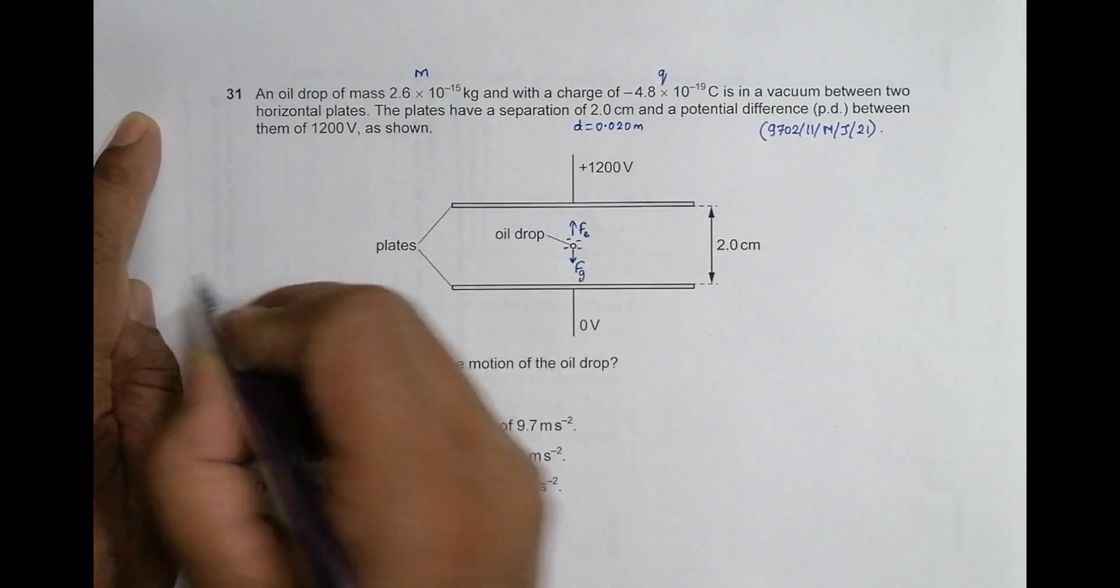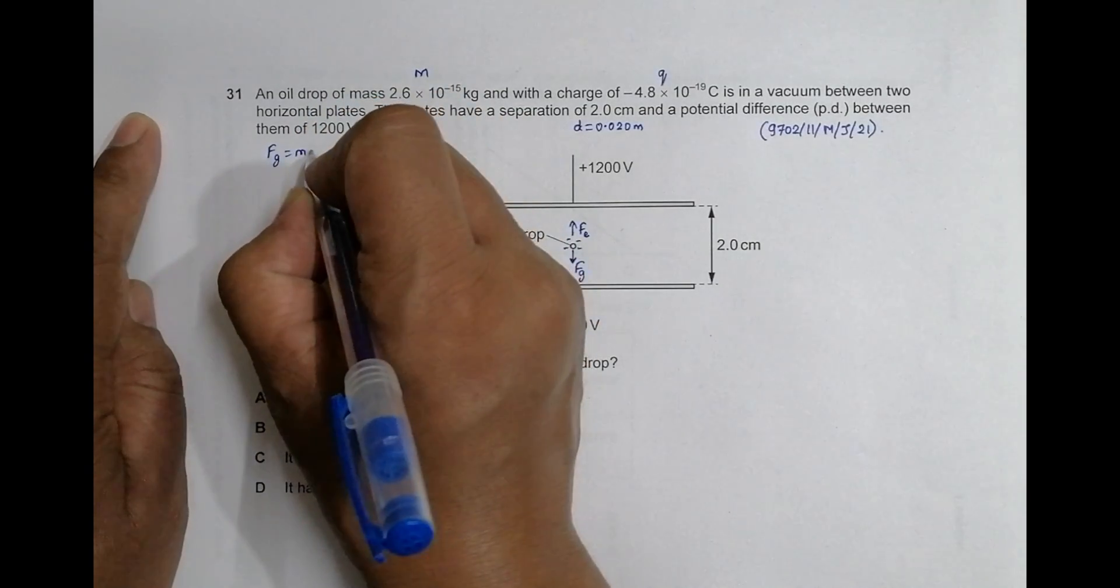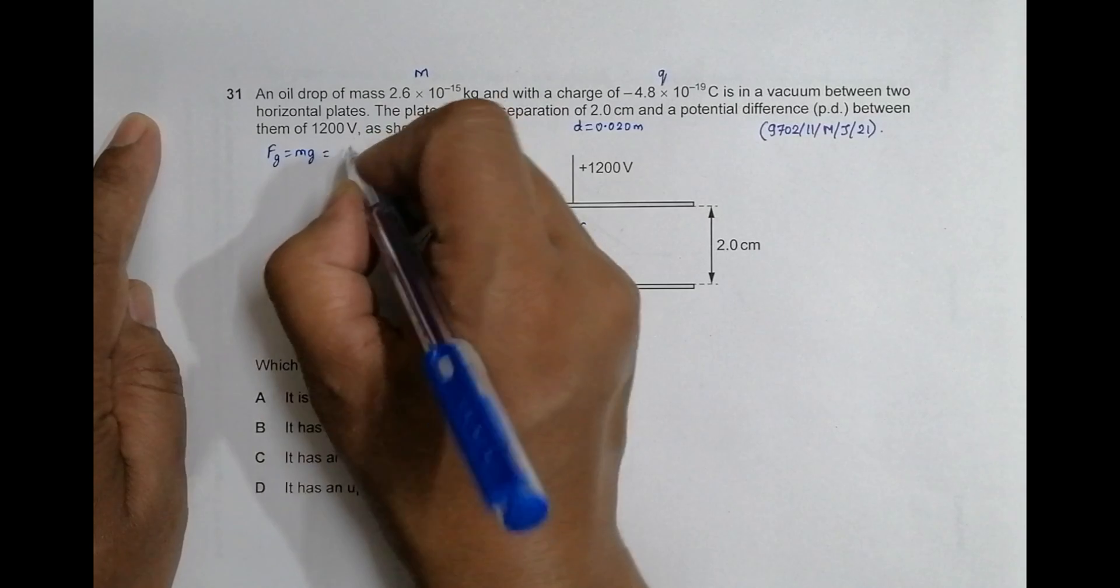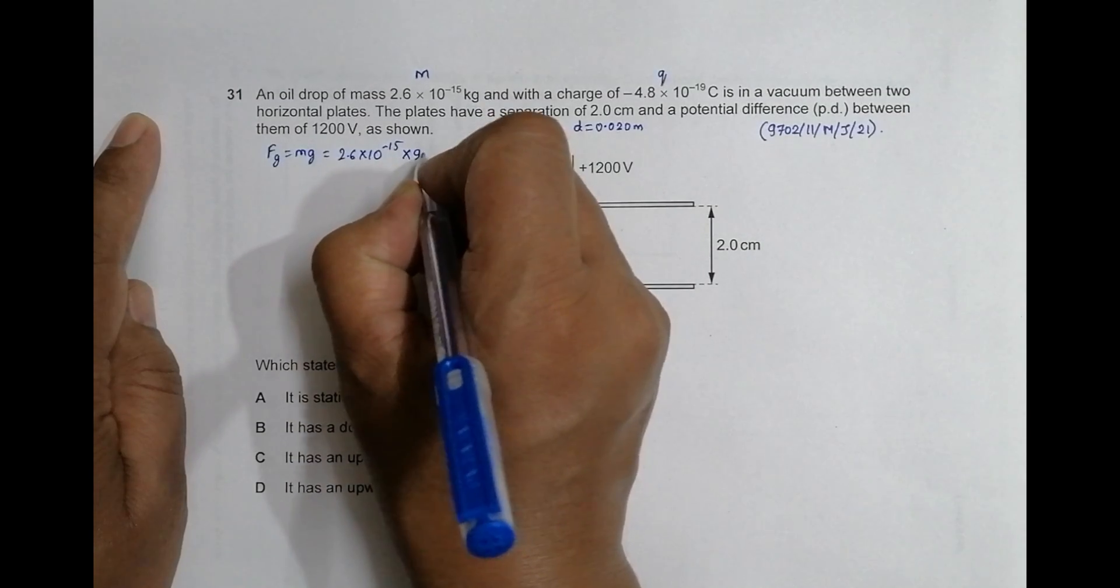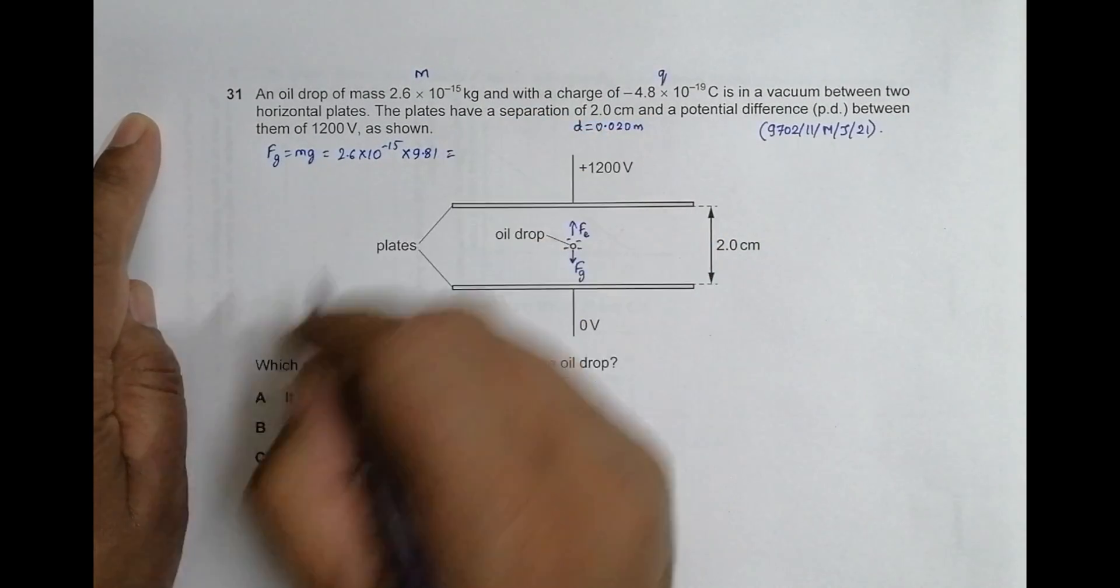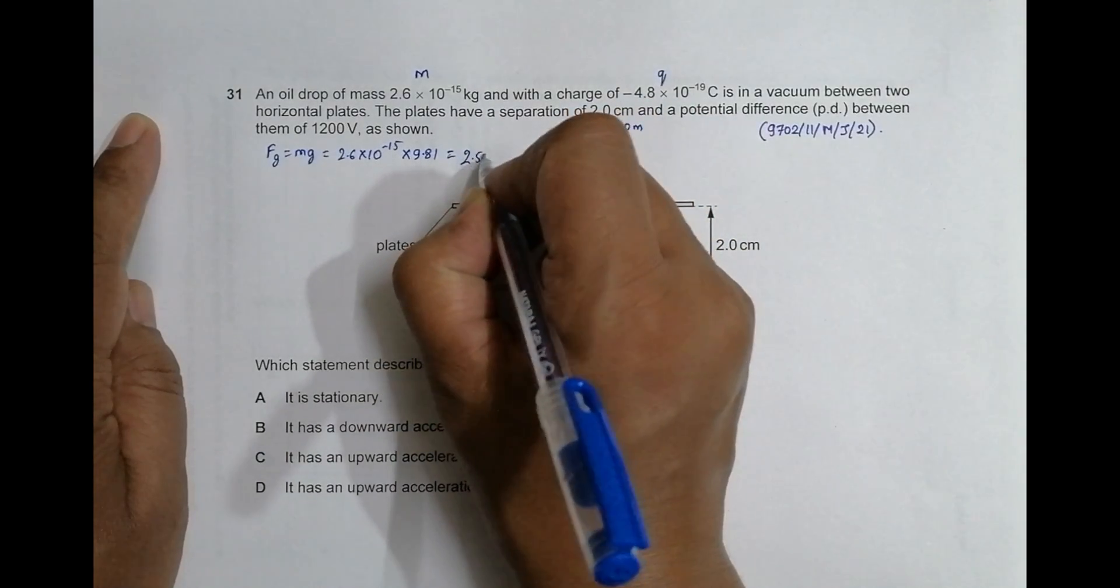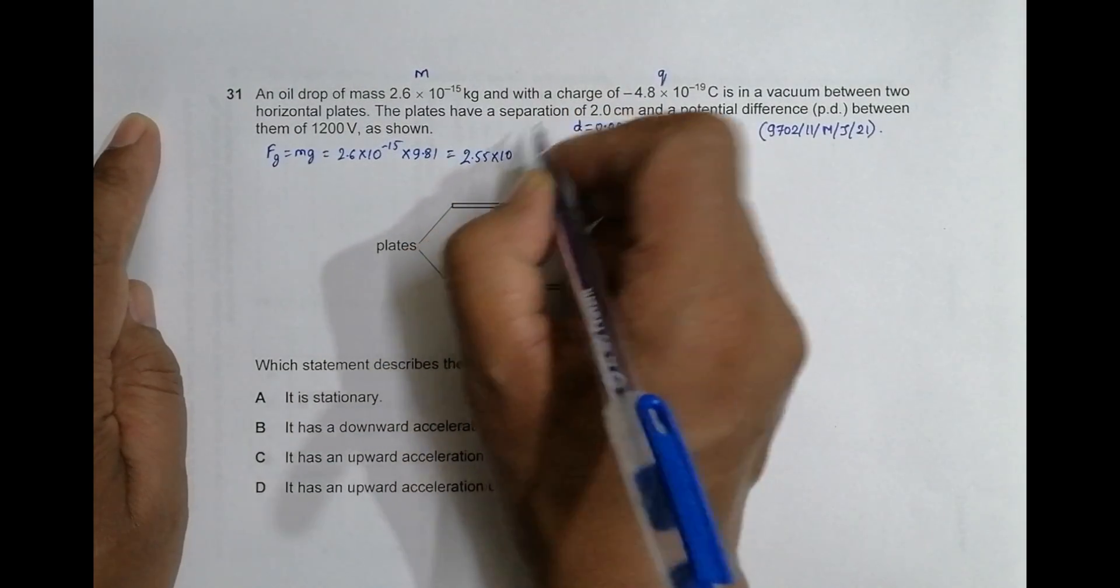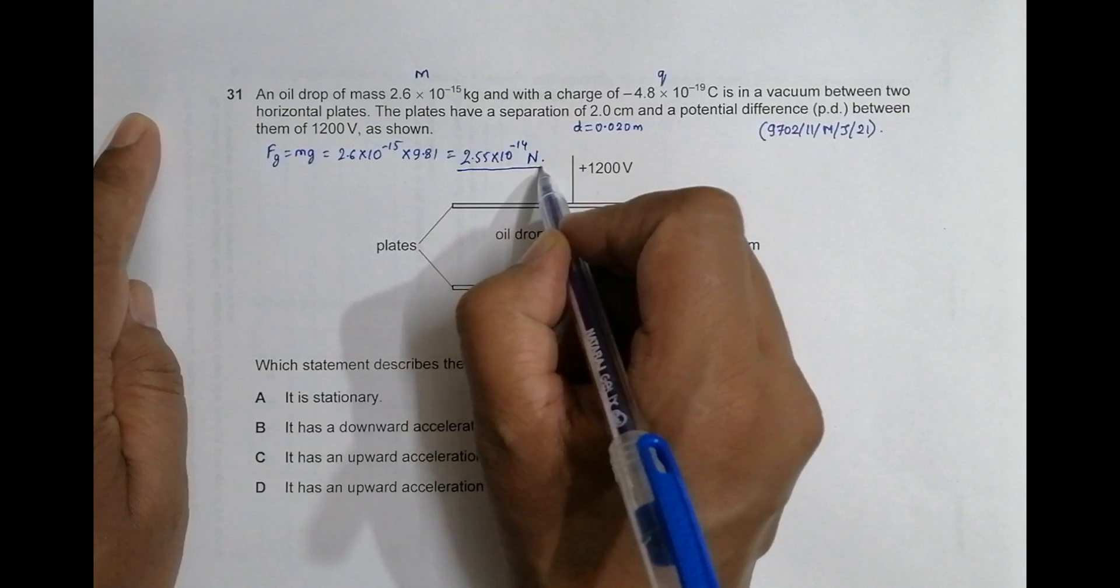Let us calculate FE and FG separately and then we can decide what will happen. The value of FG equals mass of the drop times acceleration due to gravity, equals 2.6 × 10^-15 × 9.81. Its value will be equal to 2.55 × 10^-14 Newtons. So this is the force of gravity on the oil drop.